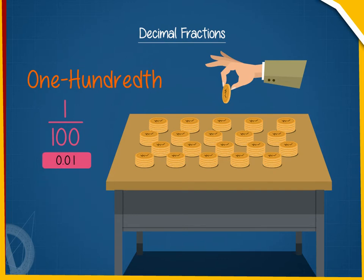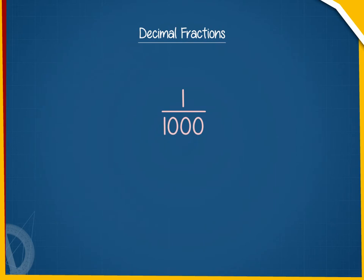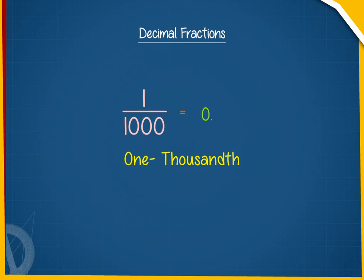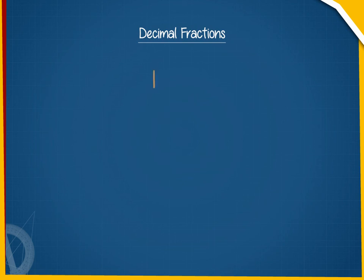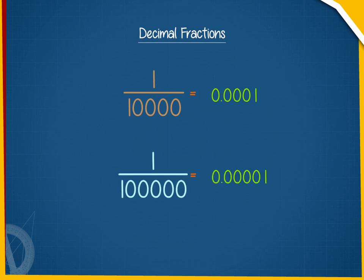Also, 1 by 1000 is read as one-thousandth and we write it as 0.001. Following the same pattern, you can write fractions with more multiples of 10 as their denominators, like 1 by 10,000, 1 by 1,000,000, etc.